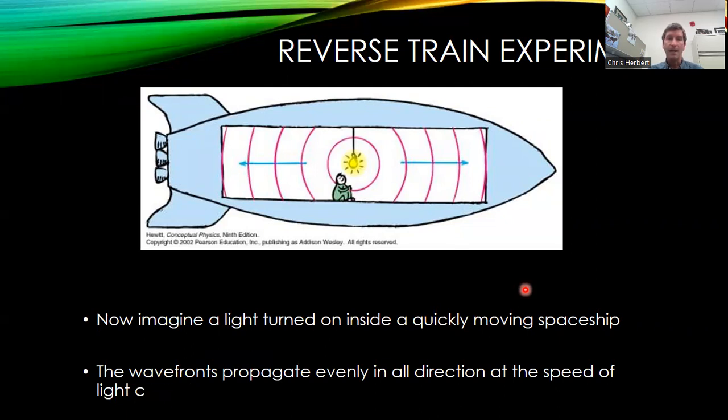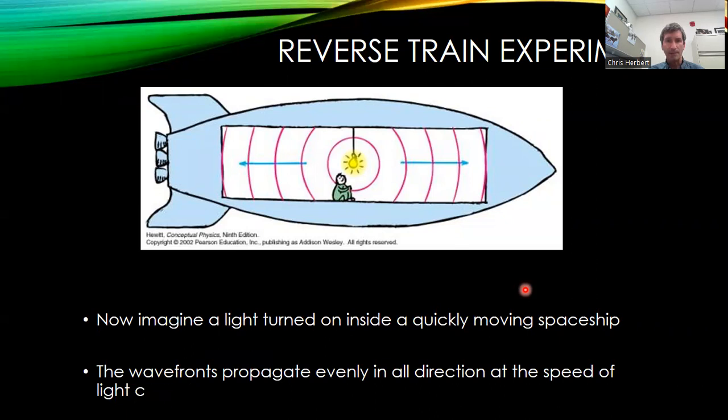Now, the wavefronts propagate evenly in all directions. There are spherical wavefronts that travel to the front and to the back. In the spacecraft's frame of reference, in terms of a person sitting in the spacecraft, they will see the light at the front and the back of the spacecraft simultaneously. So for this event, the moving frame of reference is actually going to say the two events are simultaneous.